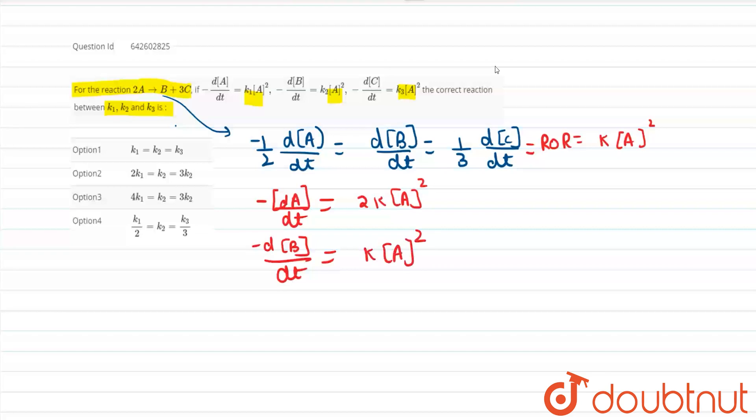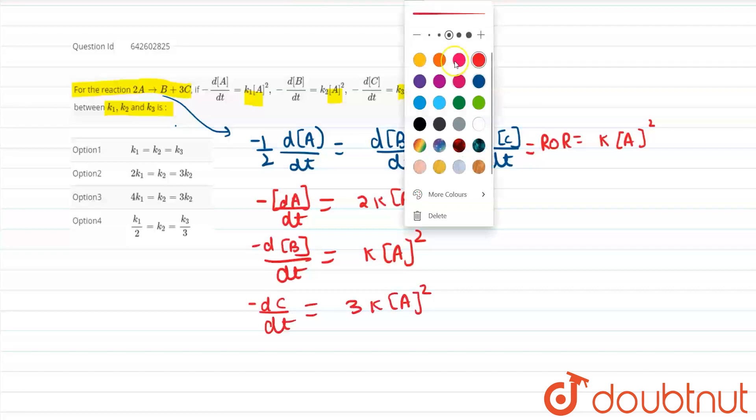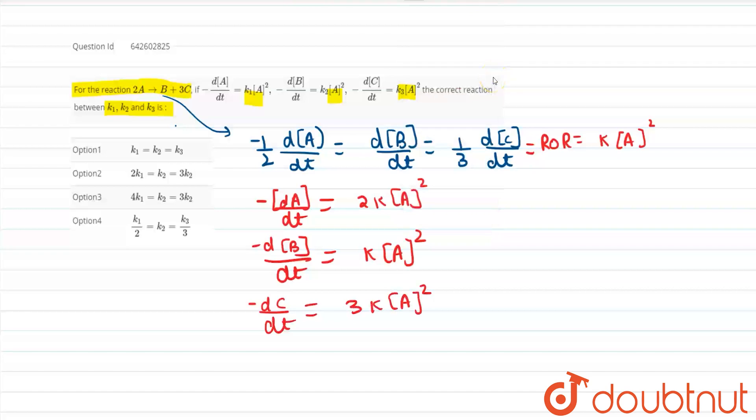And what will be minus dC/dt? Minus dC/dt will be equals to friends, 3 times of k into A². So this is something which I can very easily deduce from these equations.